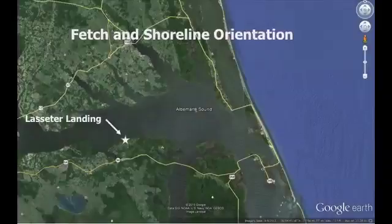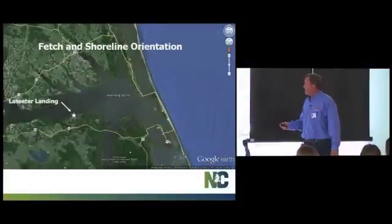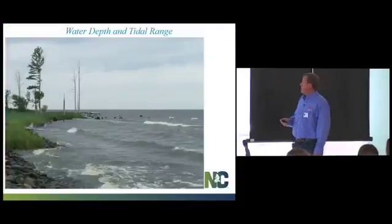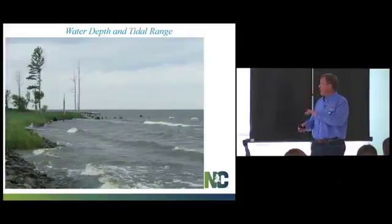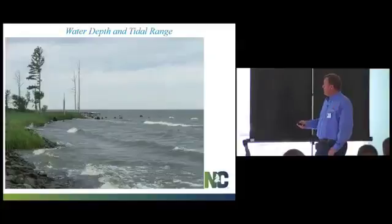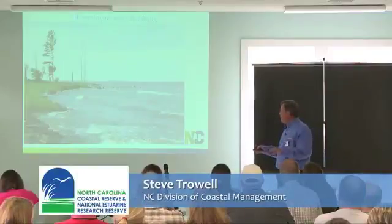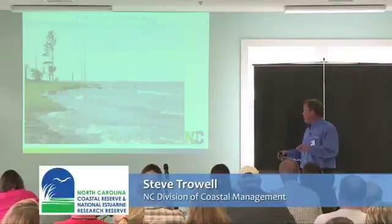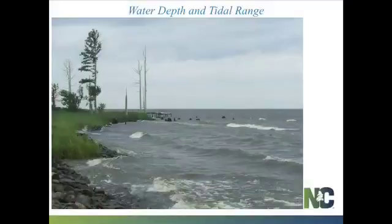When walking onto a site, I look at fetch and shoreline orientation. Predominant wind directions in eastern North Carolina are northeast and southwest, with strong energy also from the northwest and frontal boundary passages. Water depth is next — the shallower the water, the more drag on a wave, causing it to break. In designing a sill structure for high-energy situations, the key question is: how small a structure can we get away with, factoring in water depth and tidal range?